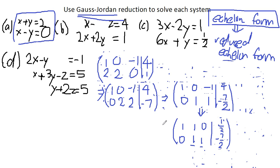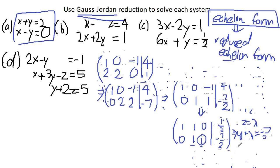We can see there are infinitely many solutions because there is one variable which is not a leading variable. For row 1, x is the leading variable; for row 2, y is the leading variable, but z is not. Therefore this system has infinitely many solutions and we express z in terms of a parameter. Let z equal lambda, then y plus lambda equals minus 7 over 2, so y equals minus 7 over 2 minus lambda. You can similarly solve for x.